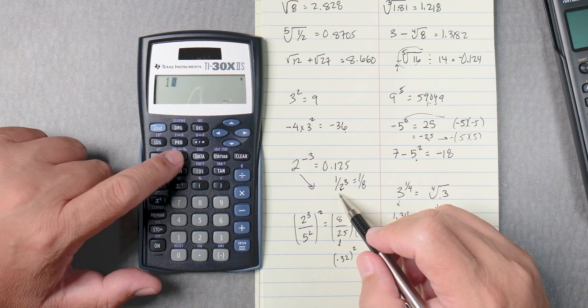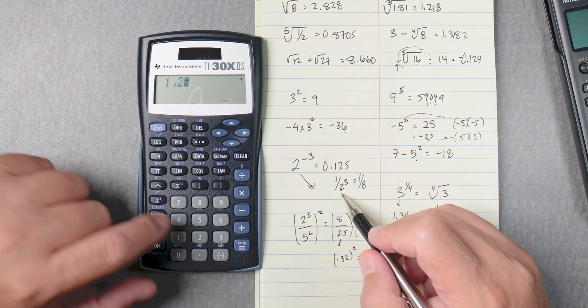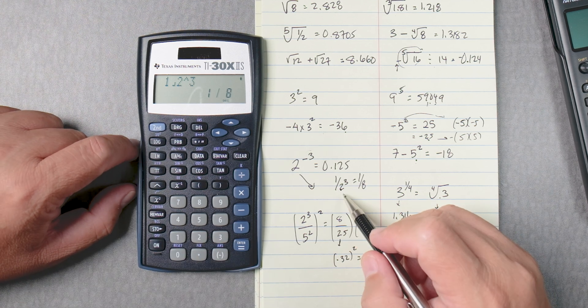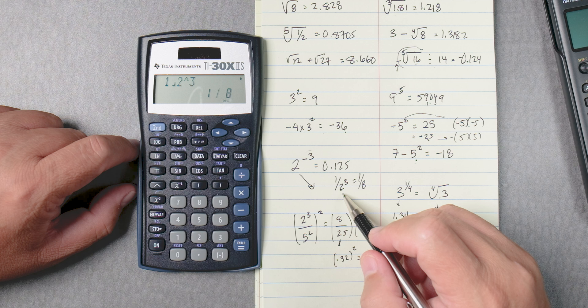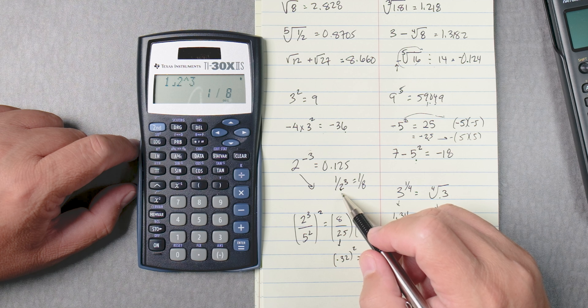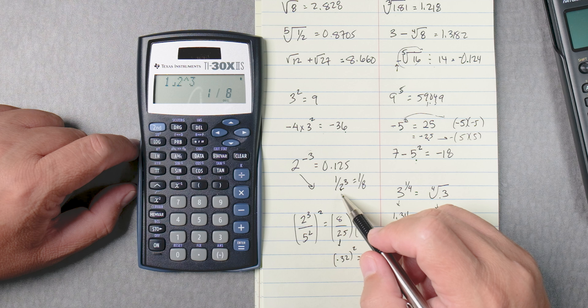Or we could probably say 1, ABC, 2 to the power of 3 equals 1 over 8, right? Is there another way of doing it? I think that's about it. I bet you there's another way to do it too, okay?